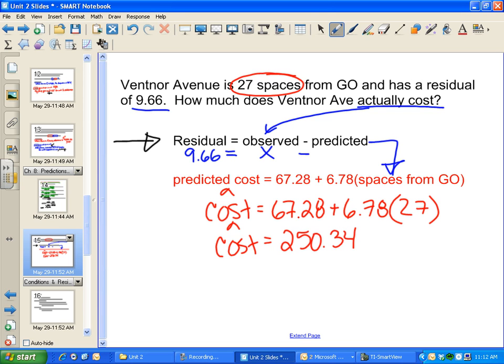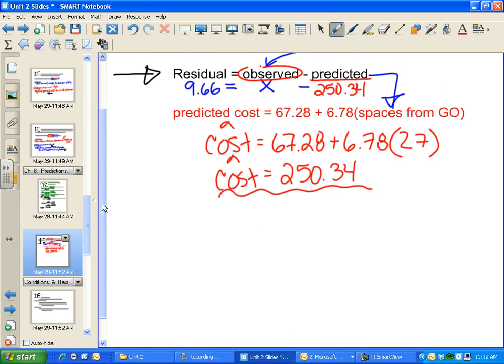I'll put this predicted cost where it says predicted: 250.34. Let's not lose sight of where we're going. I'm looking for the actual cost—the observed value. I'll rewrite this equation in blue to give myself more space to work. I have residual equals observed minus predicted. This is just an algebra problem.